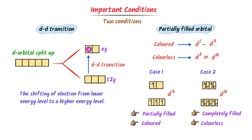To summarize, the two important conditions for the color of coordination compounds are: first, d-d transition; and second, partially filled d-orbitals. Without fulfilling these conditions, any coordination compound is colorless.